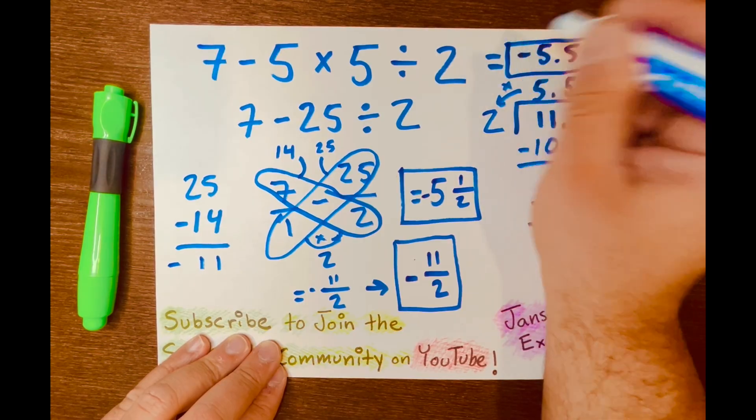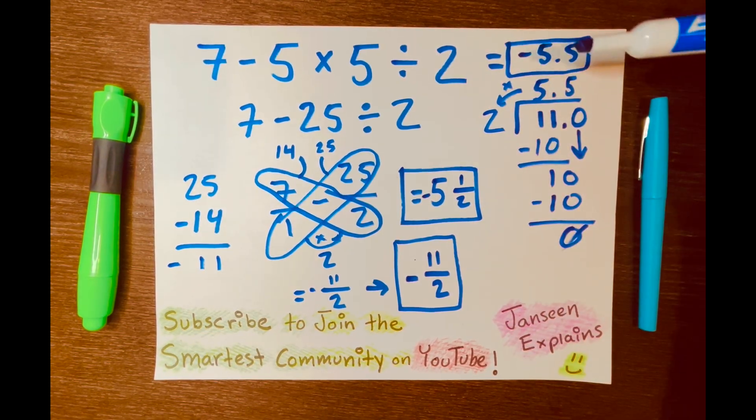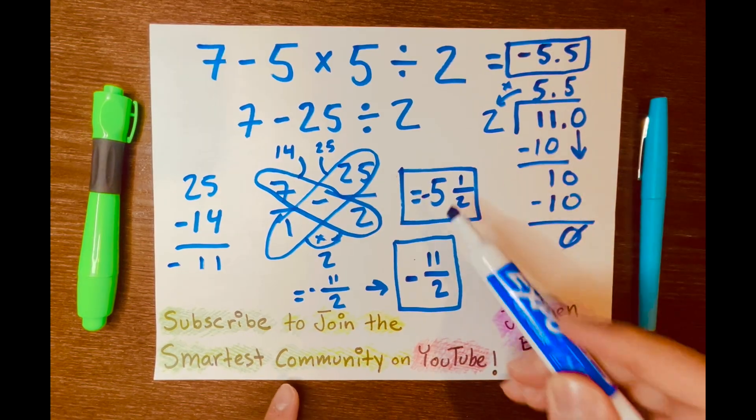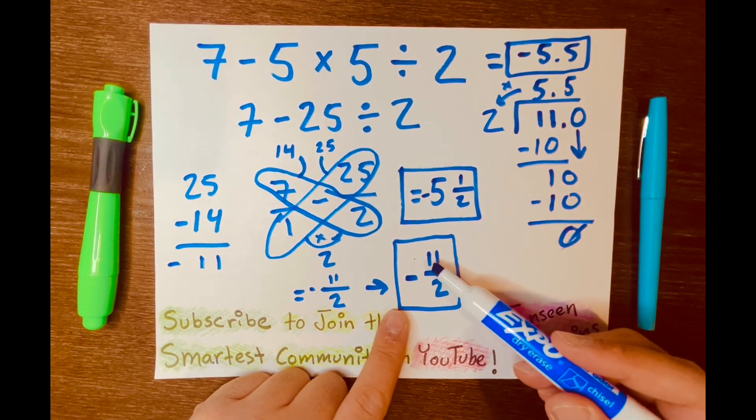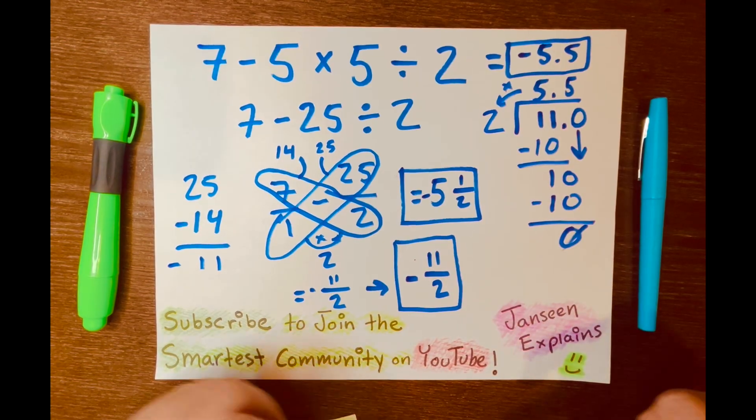Look at that. We have three different answers. We have negative 5.5, negative 5 and 1 over 2, and lastly, negative 11 over 2. And there you go.